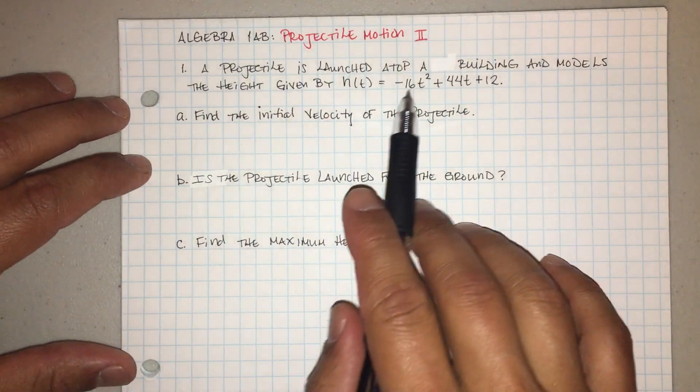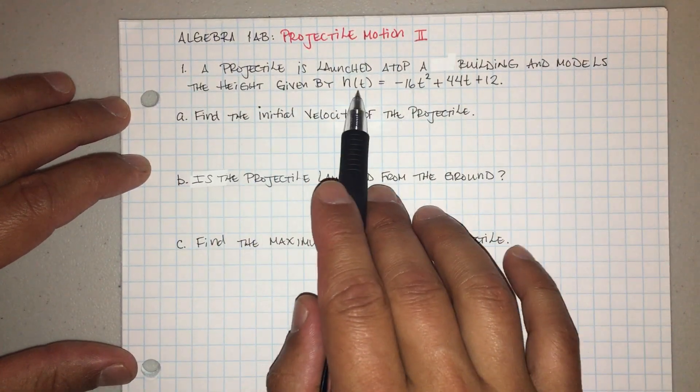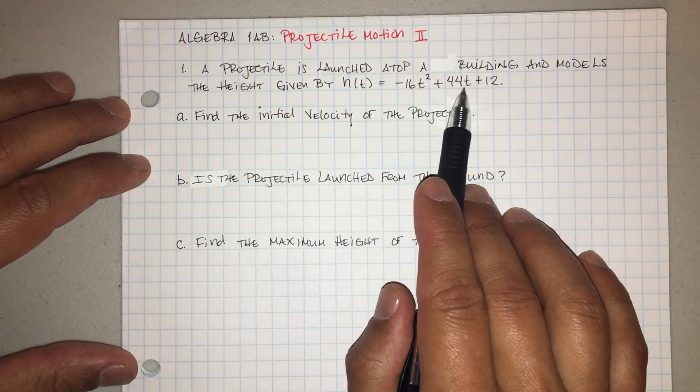So it says a projectile is launched atop a building and models the height given by h of t equals negative 16 t squared plus 44 t plus 12.